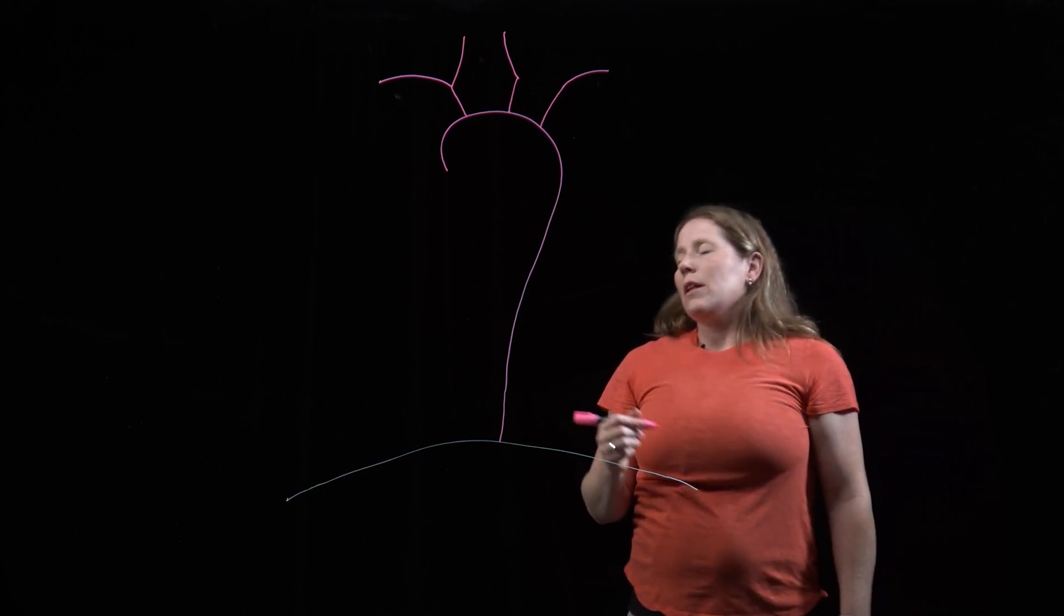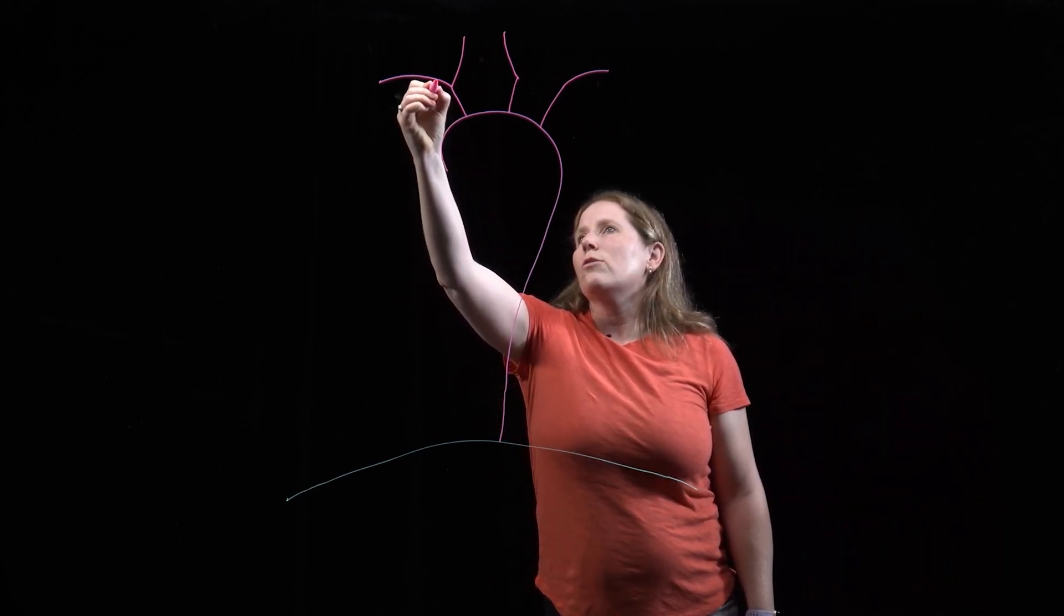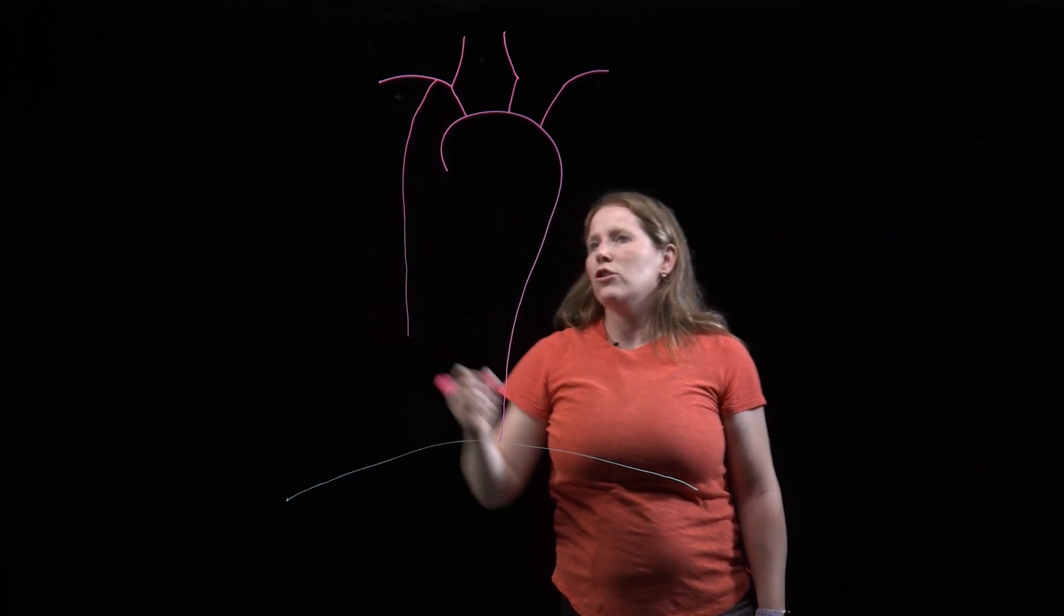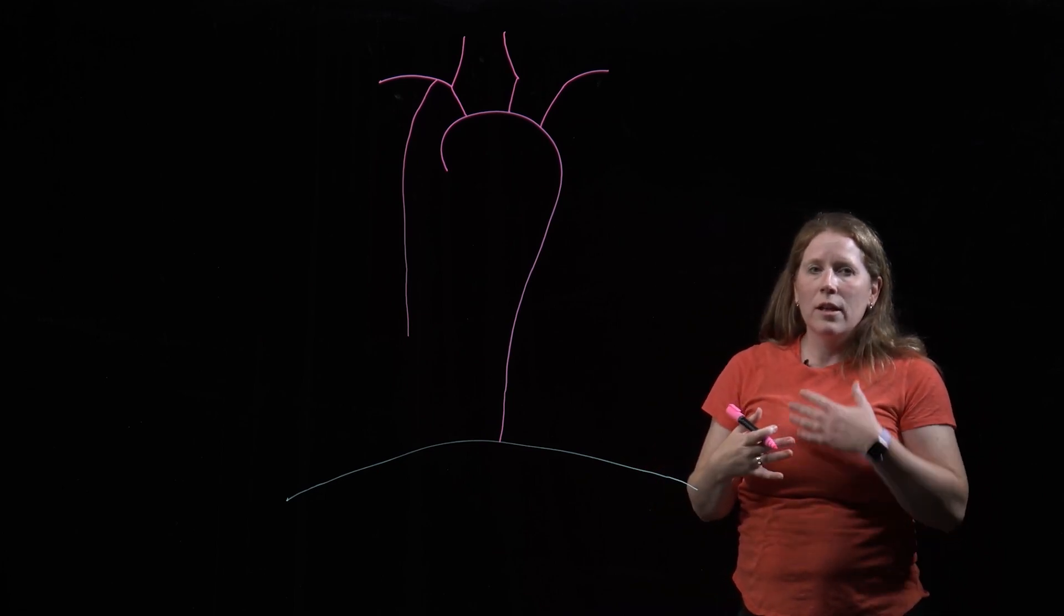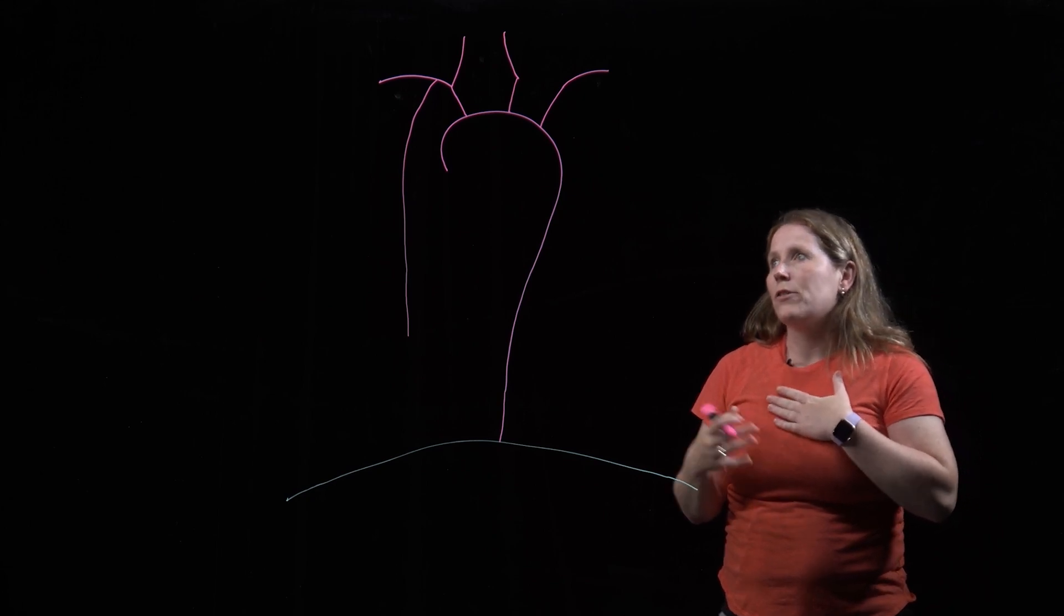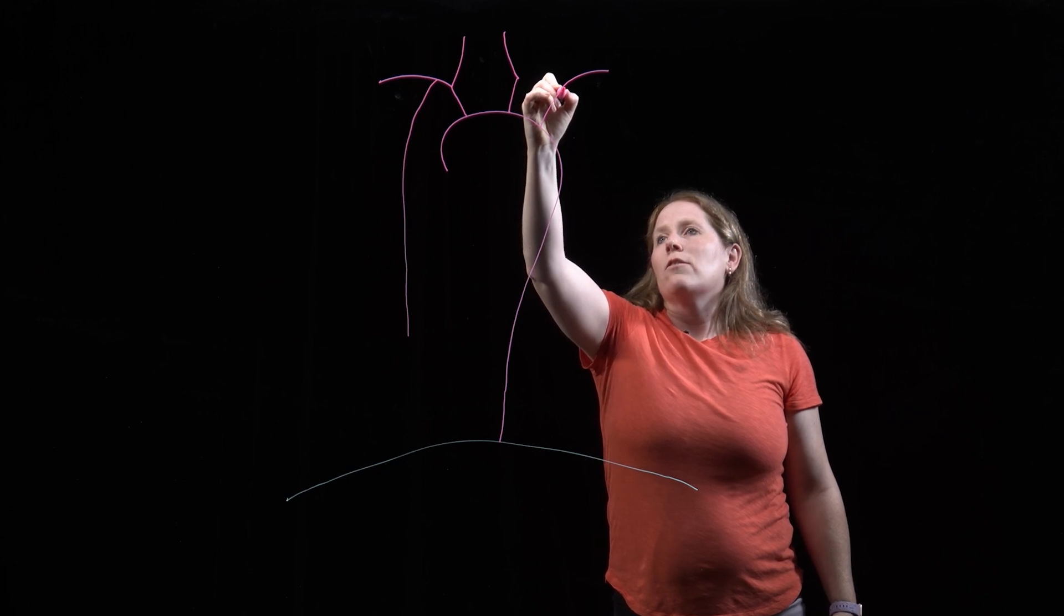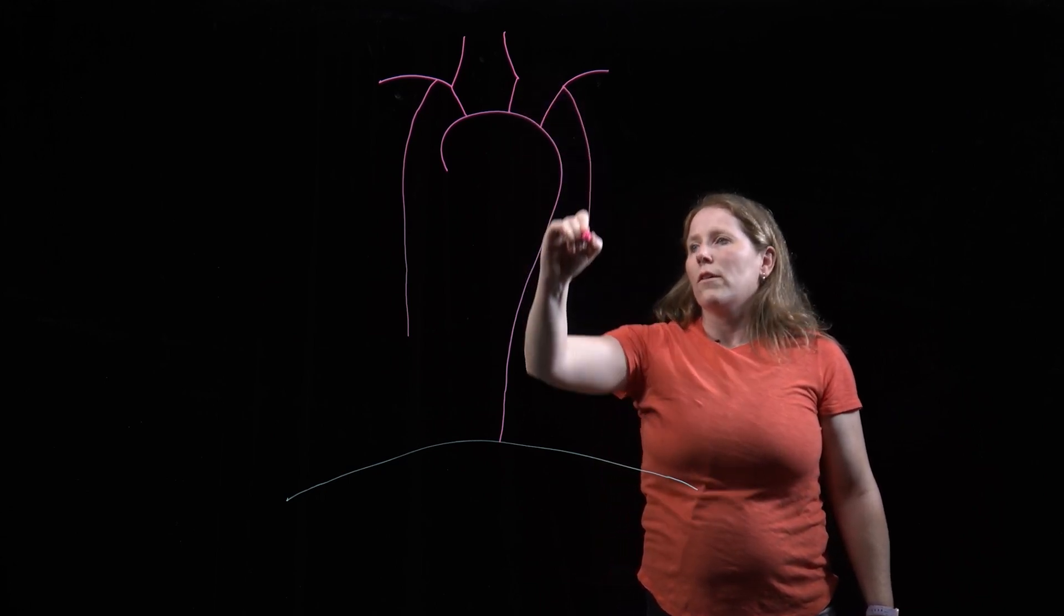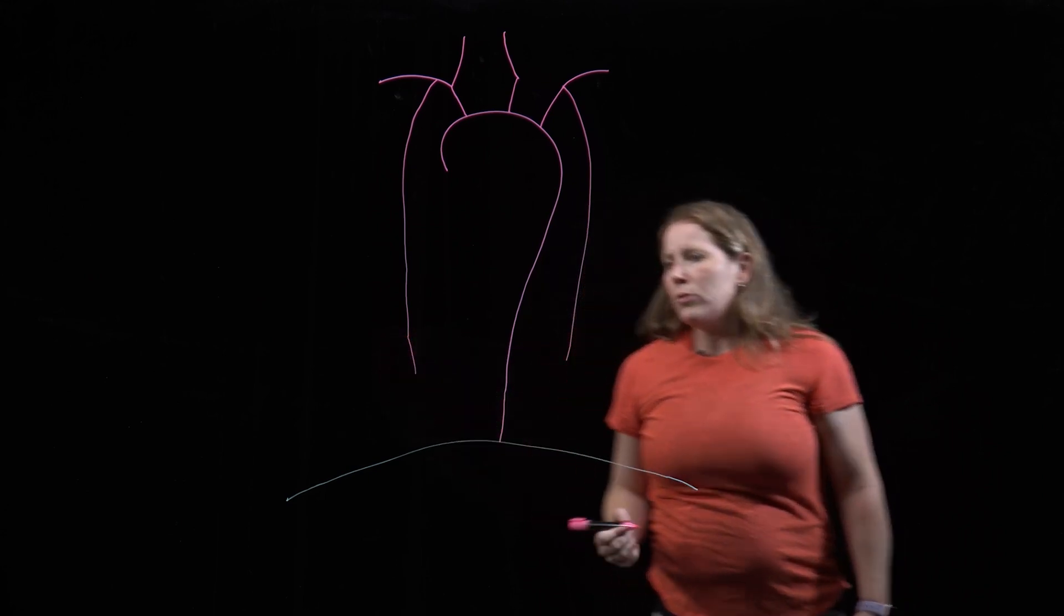Now off of the subclavian arteries, we have arteries that are going to pass anteriorly and they run just down the posterior surface of the anterior thoracic wall. So just deep to our anterior ribs here we have these internal thoracic arteries. I'll draw those on both sides, and those are important.